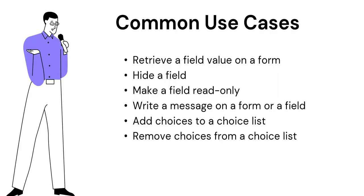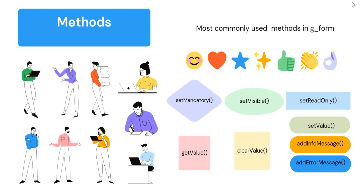Here are a few common use cases in ServiceNow where we can use the g_form object: retrieving a field value on a form (on the incident form, change form, or any other form), hiding or showing a field, making a field read-only, writing a message on top of the form or on a field, and adding or removing choices from a choice list. These are the most commonly used methods from my experience, and we will look at them in depth — especially since they are critical for interviews.